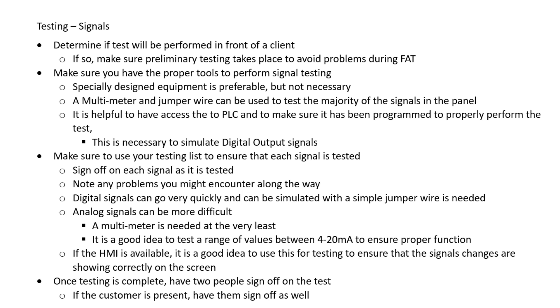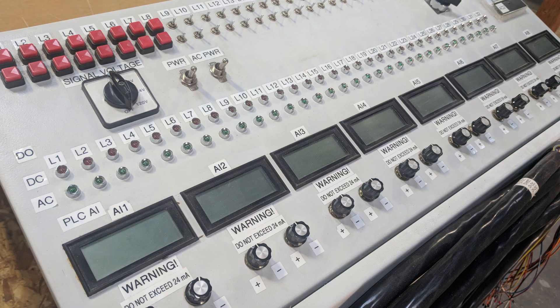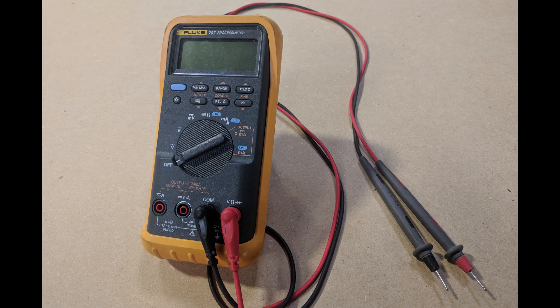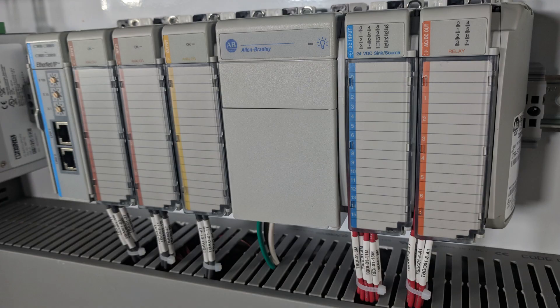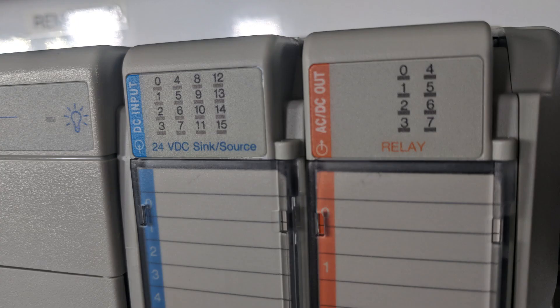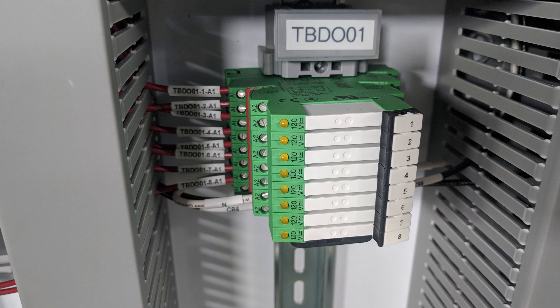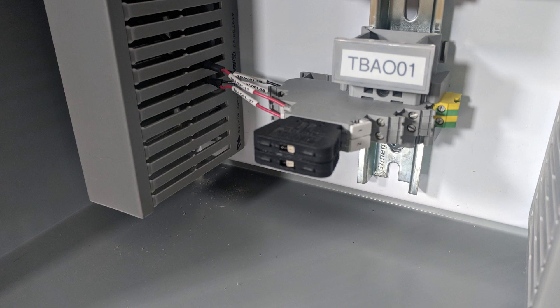We also want to make sure we have the right tools in place for these signal tests. In a lot of cases, specifically designed equipment should be used, but it's not always necessary. In most cases, you can simply use a multimeter and a jumper wire for the digital inputs. It's also helpful to have access to the PLC via a laptop so we can verify it's programmed correctly and simulate digital output and analog output signals.